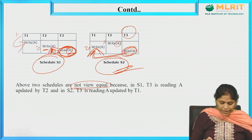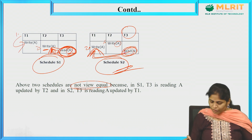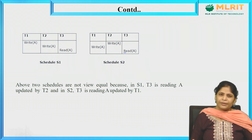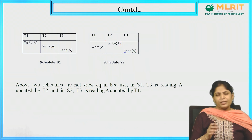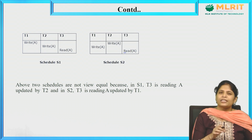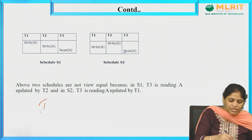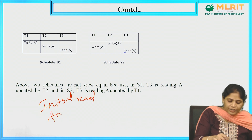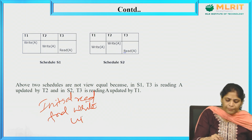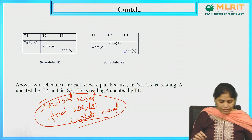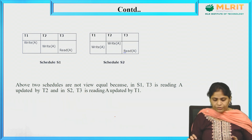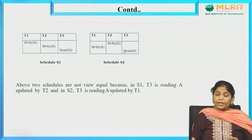In this manner, we can determine view serializability. View serializability requires satisfying three conditions: initial read, final write, and update read. These are the three conditions that must be satisfied for two schedules to be view equivalent.